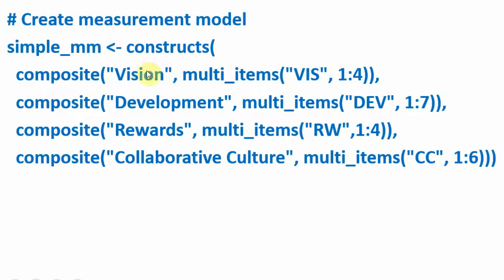A model can have multiple constructs — we have got vision, development, rewards, and collaborative culture. These are the names of the constructs. Each construct is measured using multiple items, coded as VIS1, 2, 3, 4; DEV1, 2, 3 up until 7; rewards abbreviated as RW; and collaborative culture abbreviated as CC. These are the initials used in the data file, so make sure they match.